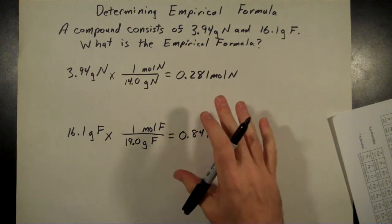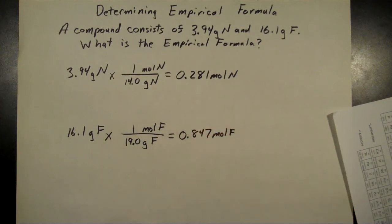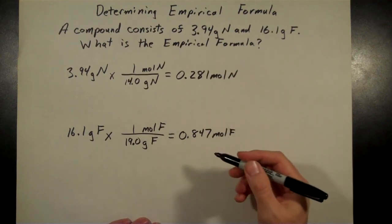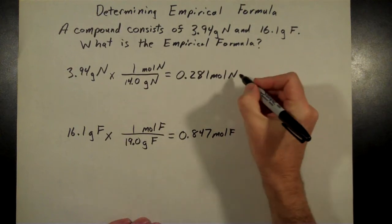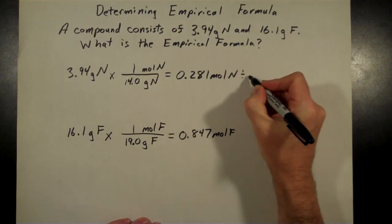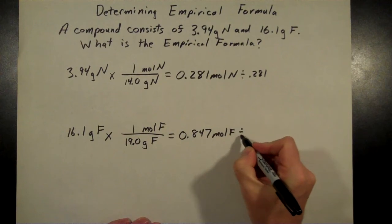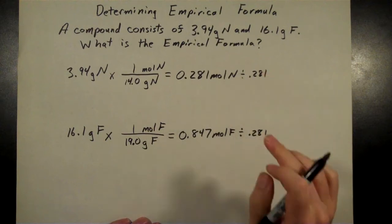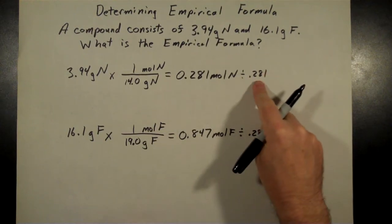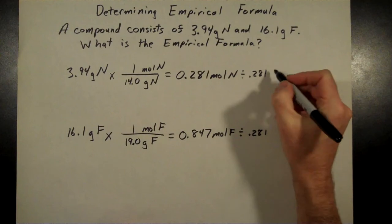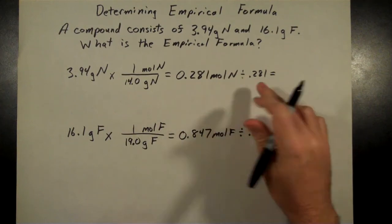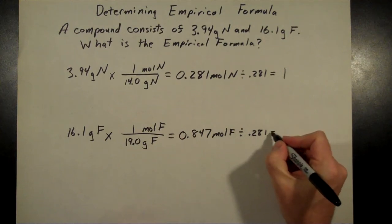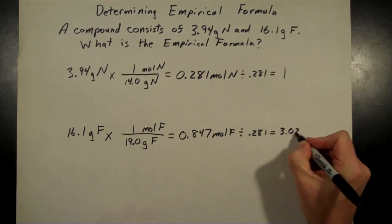Neither one of these is a whole number. You don't want to round these off at this point. To get to that whole number value, you've got to look at each of these, and we're going to divide each one by the smaller of the two. Comparing these two, the 0.281 is the smaller one, so I'm going to divide this by 0.281, and I'm going to do the same thing down here. You want to do everything kind of from this step on, you're doing the same function in each case. 0.281 divided by itself, of course, is just a 1. And 0.847 divided by 0.281, that comes out to 3.02.